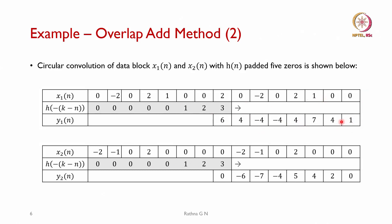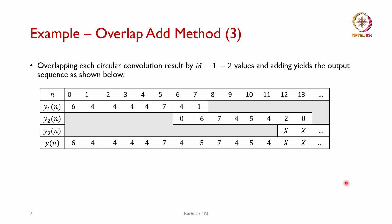This is how we perform circular convolution to get y₁(n). Now x₂(n) is the next block: [−2, −1, 0, 2, 0, 0] padded with 2 zeros, going in the forward direction. The first output is 0. Using circular convolution — repeating values as needed — we get −2 × 3 = −6, and so on. The output y₂(n) is computed accordingly.